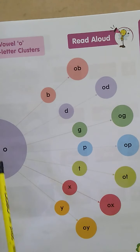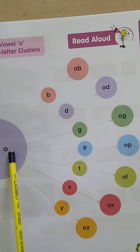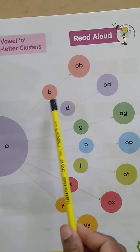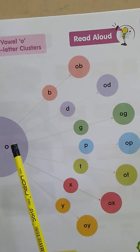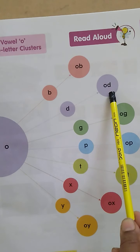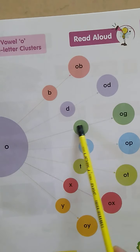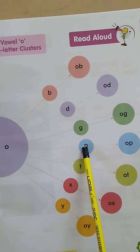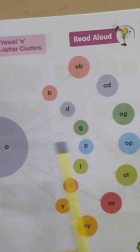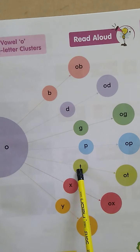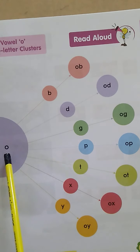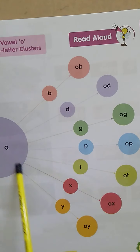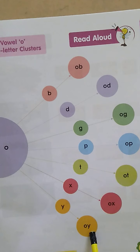We are going to learn the sounds of O. The letter O has a sound of O. O and B together make the sound OB. O and D together make the sound OD. O and G make the sound OG. O and T make the sound OT. O and X make the sound OX.